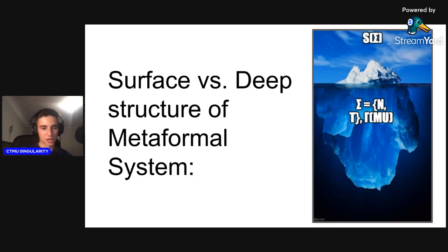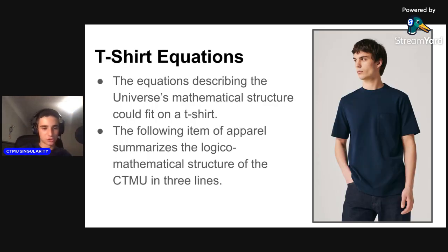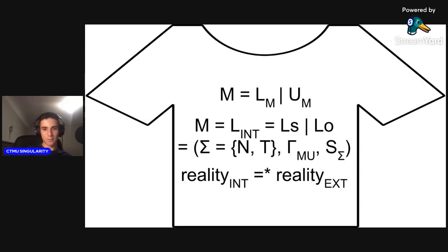Cosmologist Max Tegmark once prophesied that the equations describing a master theory that could explain all of spacetime and its mathematical structure could break into a finite description short enough to fit on a t-shirt. The following item of apparel summarizes the logico-mathematical structure of the CTMU in three lines. Part 1: M = Lm × Um generically couples language and universe into an ontic identity which contains its own universe and identity language, creating the global property or intension of reality (Lm) with the physical universe (Um), or extension of reality.